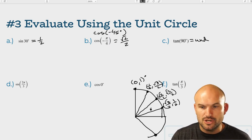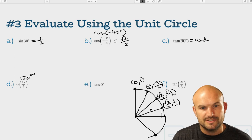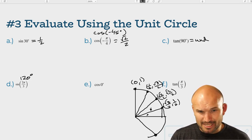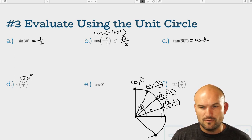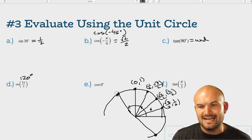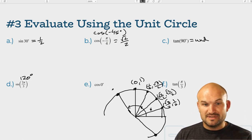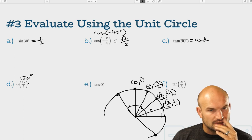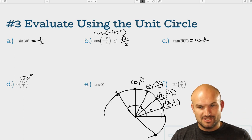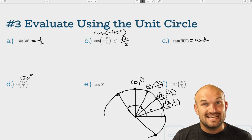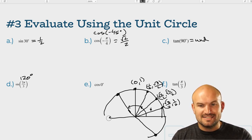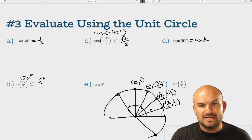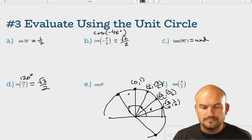For tangent of 0 degrees, that would be 0 over 1, which equals 0. So just because tangent is on an axis doesn't automatically mean it's undefined — it's only undefined when you're dividing by zero. For 2pi over 3, which equals 120 degrees: from 0 to 60 degrees is 60 degrees, and another 60 degrees takes you to 120. As we reflect the 60-degree point over the y-axis, the y-coordinate stays positive but the x-coordinate becomes negative. So sine of 2pi over 3 equals square root of 3 over 2.